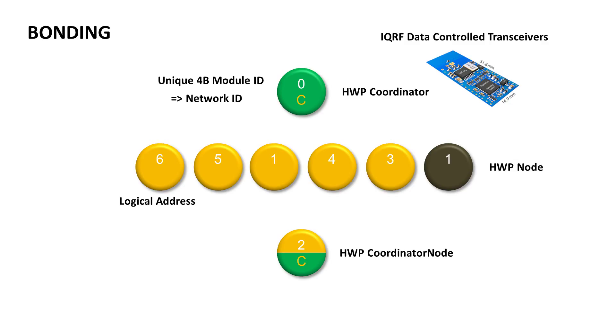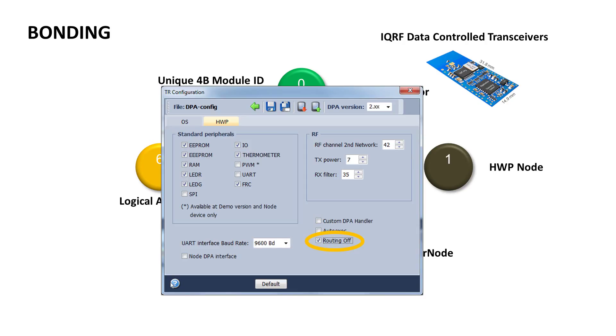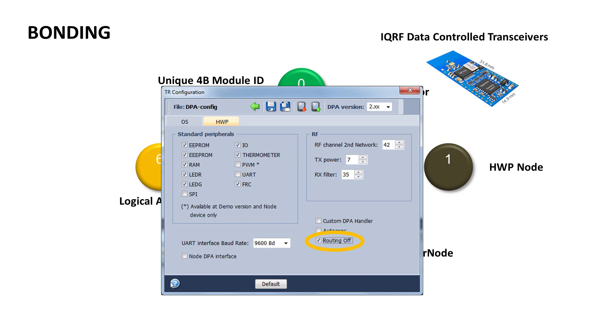Let's say the devices number 1 and 4 are temperature sensors running on battery, so we don't want them to work as routers and we switch the routing off. This can be done very easily in the TR configuration in the IQRF IDE right here. We place the nodes to their final positions and here you can see the wireless links between the nodes.